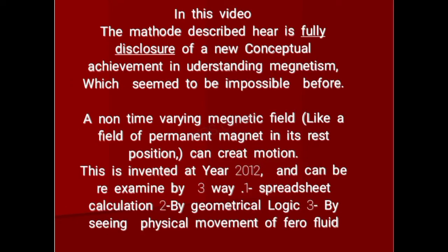The method described here is a full disclosure of a new conceptual achievement in understanding magnetism, which seemed to be impossible before. A non-time-varying magnetic field, like the field of a permanent magnet in its rest position, can create motion. This was invented in 2012 and can be re-examined three ways: by spreadsheet calculation, by geometrical logic, and by seeing the physical movement of ferrofluid.